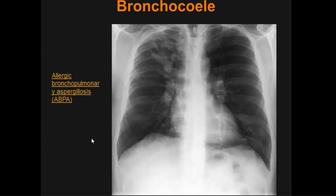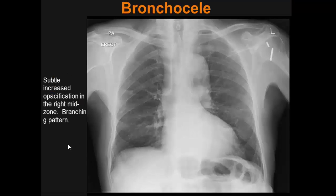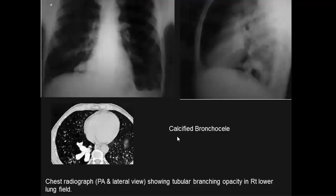Bronchoceles are seen in allergic bronchopulmonary aspergillosis, presenting as mucus-filled bronchi with subtle increased opacification in the right middle zone. Calcified bronchoceles appear on plain radiograph as short tubular branching opacities in the right lower lung field. This curvilinear shadow represents a linear artifact.